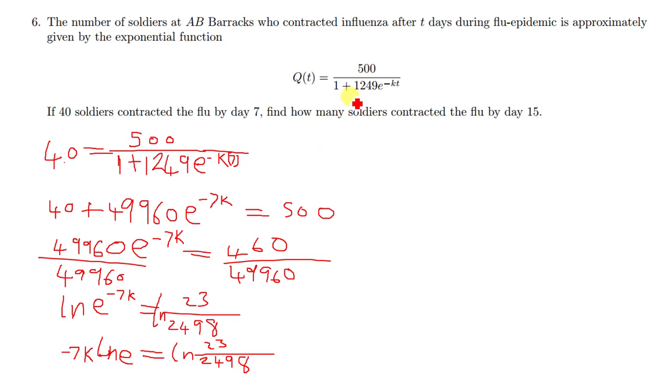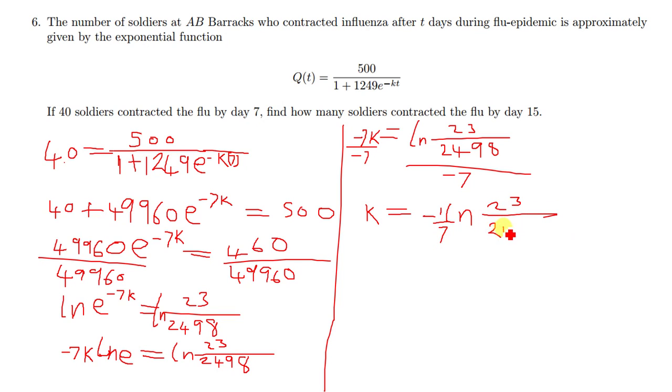From there, we know to say the ln of e is just 1, so meaning we just remain with negative 7k on this side. Then you have negative 7k equal to ln of 23 over 2498. Then you divide by negative 7 to find the value of k. So k is just negative 1 over 7 times ln of 23 over 2498. This is basically the value of k.